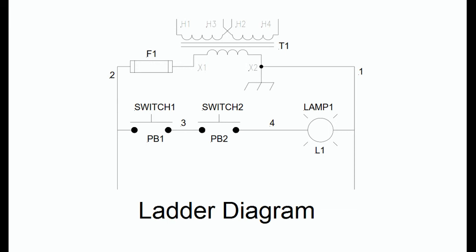Note that the added wires have been assigned the wire numbers 3 and 4, and the added components have been assigned the reference designators PB1, PB2, and L1. Also note that the switches are on the left and the lamp is on the right. This is a standard convention when designing and drawing machine circuits.